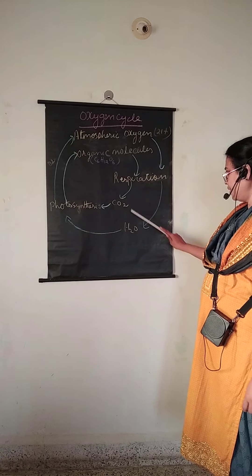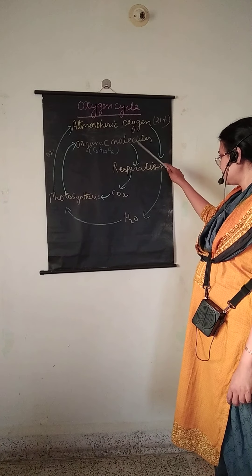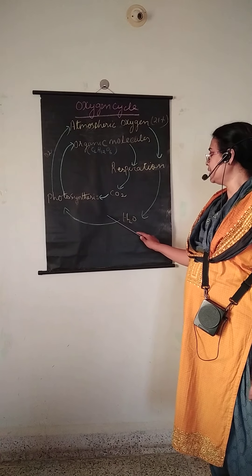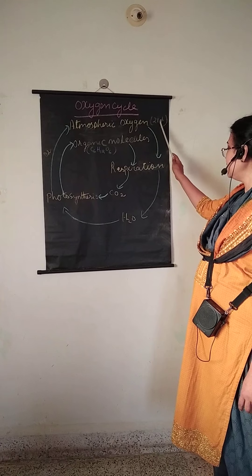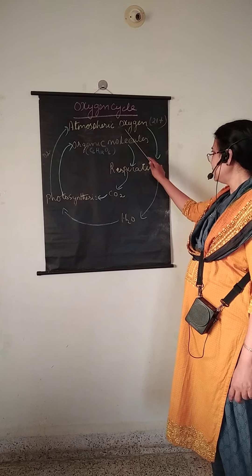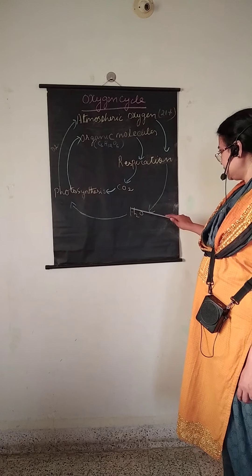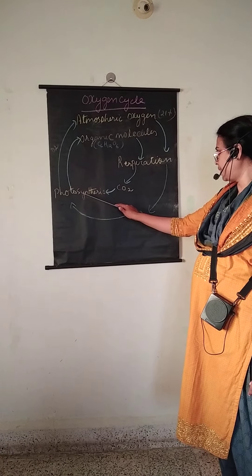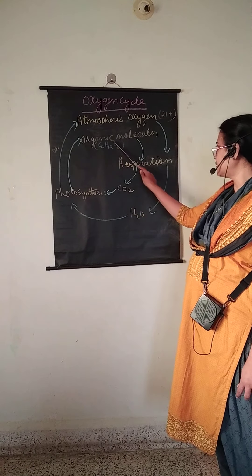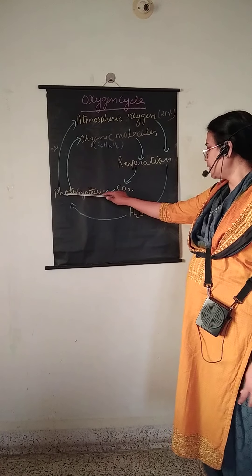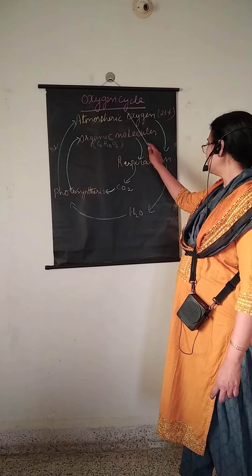These organic molecules again break down during respiration and get converted into carbon dioxide, and the cyclic process continues. Atmospheric oxygen — 21% — is utilized by living organisms during respiration, releasing carbon dioxide and water, which is utilized for photosynthesis. During photosynthesis, glucose is prepared, and during respiration, glucose again breaks down into carbon dioxide. As you can see here, during photosynthesis, oxygen is released back to the atmosphere.